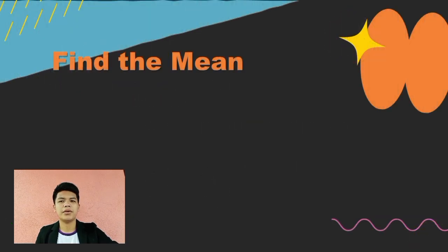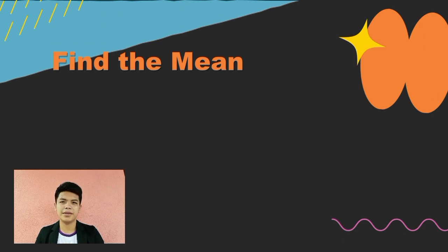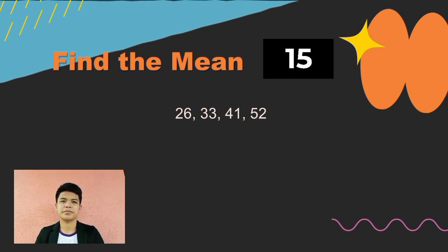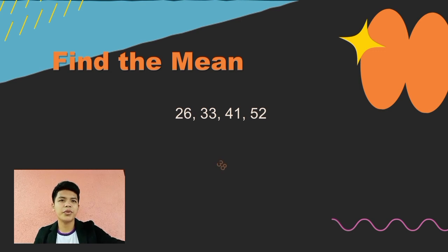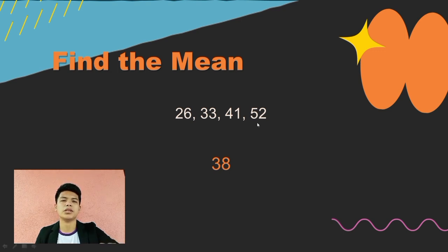Now we'll have a practice exercise. First, we need to find the mean of the following numbers: 26, 23, 41, and 52. I'll give you 15 seconds to answer. Our mean here is 38. We simply add 26, 23, 41, and 52, then divide by the number of values, which is 4, and we get a mean of 38.